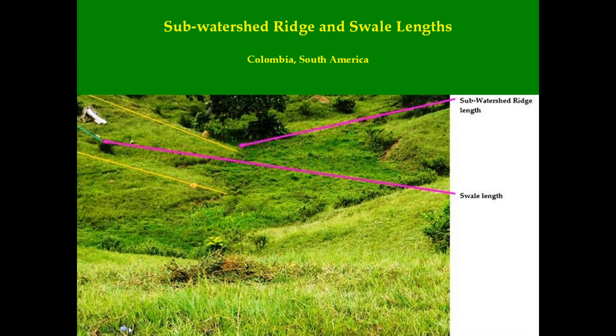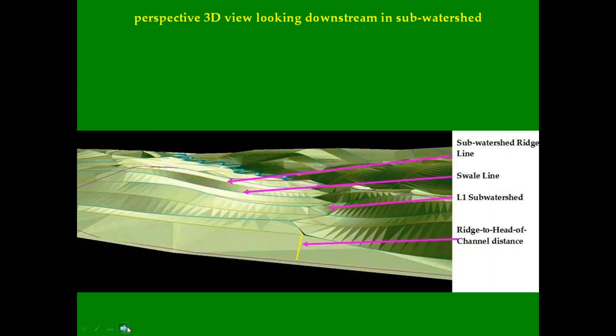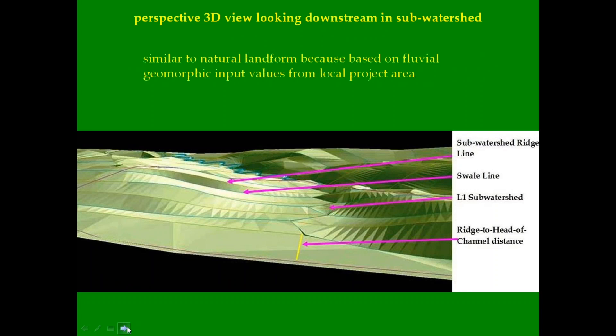The variations are inputs to the Geofluv design and Natural Regrade. This is a plan view of a 3D Geofluv design made using Natural Regrade. As in a natural landform, these swales function to break the valley wall into smaller catchments that collect water and convey it without valley wall erosion to a stream channel sized to handle the increasing volume of water in the downstream direction. Here is a 3D perspective view down a sub-watershed of a Natural Regrade design. It is similar to a natural landform because it is based on fluvial geomorphic inputs measured from a local project area. The update simplifies sub-watershed ridge and swale editing.